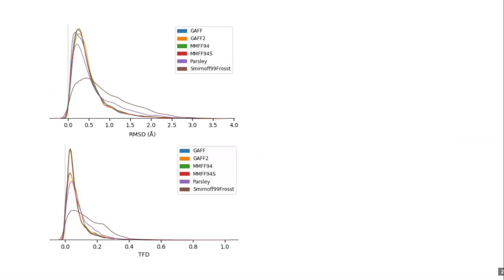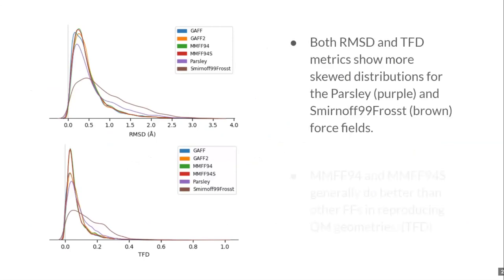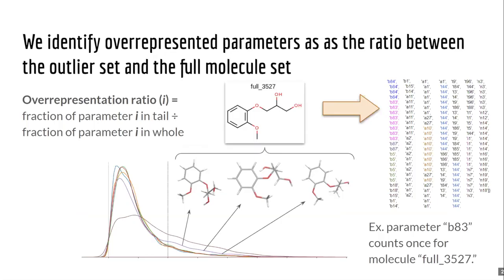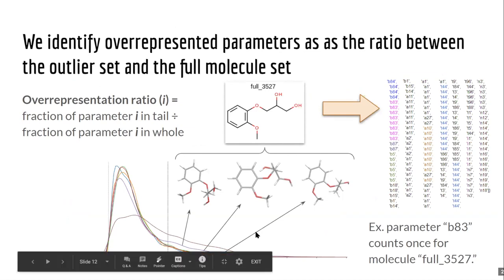The results for RMSD and TFD analysis are histogrammed here. We see that once again, Parsley does improve compared to SMIRNOFF99Frosst — we can see a reduction in the tail region as well as an increase in the peak. We see a similar trend between RMSD and TFD, and once we control better for molecular size, the MMFF94 and MMFF94S are a little bit more consistent with each other and do a little bit better than the rest of the force fields in this work.